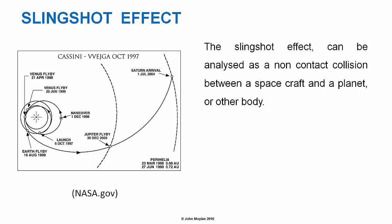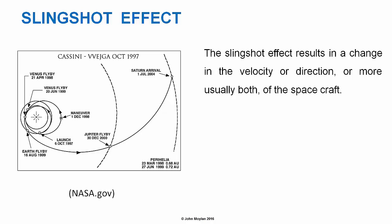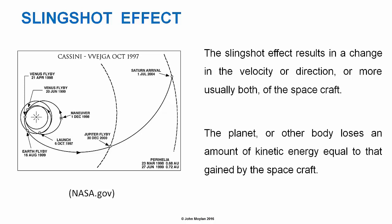The slingshot effect can be analyzed as a non-contact collision between a spacecraft and a planet or other body. Both momentum and kinetic energy are conserved, so this is an elastic collision. The slingshot effect results in a change in the velocity or the direction, or more usually both, of the spacecraft.